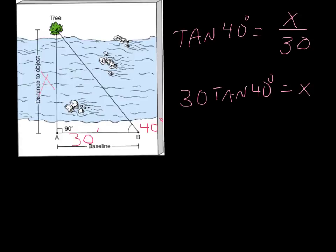So tangent 40 degrees equals x over 30, x is the opposite side of our triangle, 30 is our baseline, is our adjacent side. So then cross multiply, now put it into your calculator.